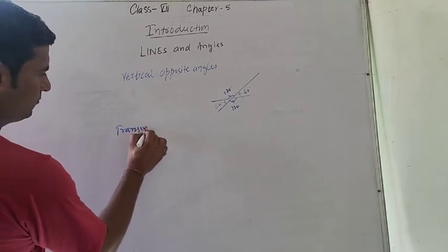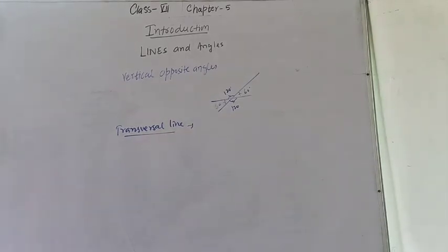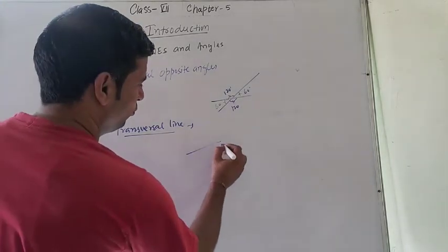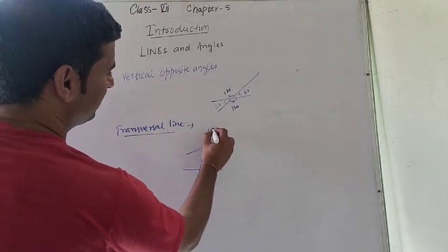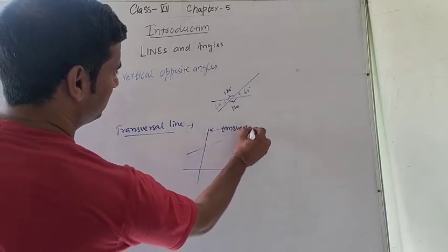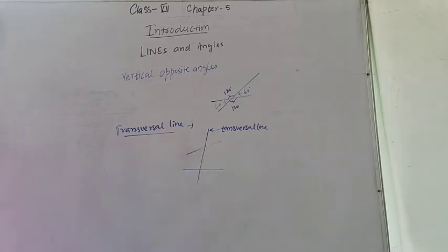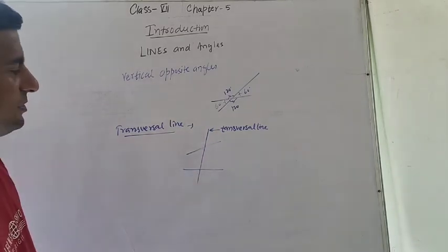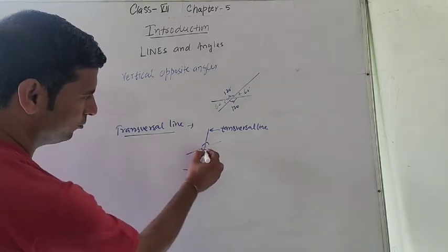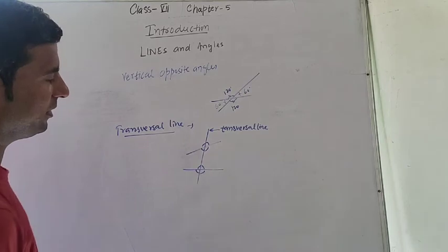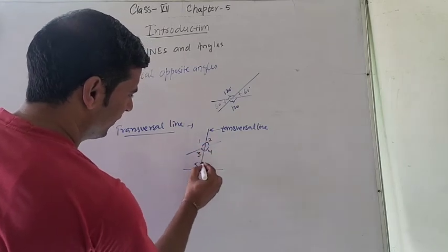Next is the transversal line. What is a transversal line? When a straight line intersects two or more straight lines at two different points, it is known as a transversal line. When a transversal intersects two or more lines, it makes eight angles, named angles 1, 2, 3, 4, 5, 6, 7, and 8.